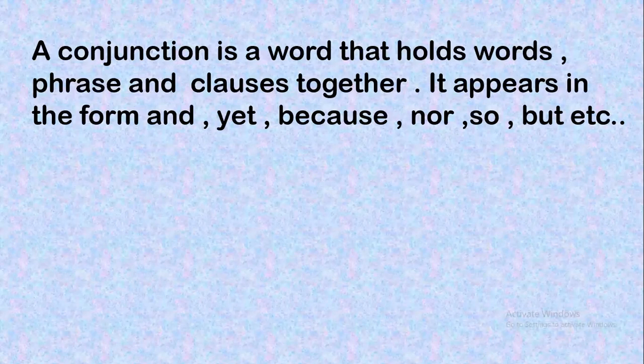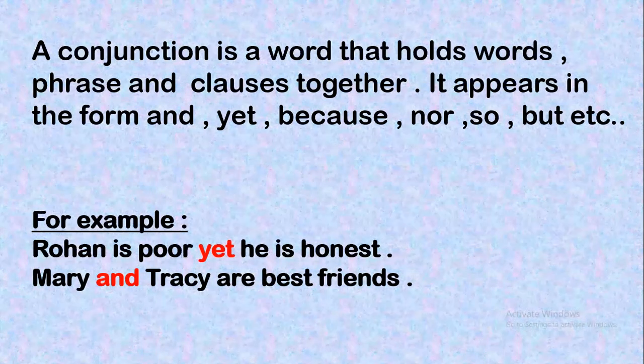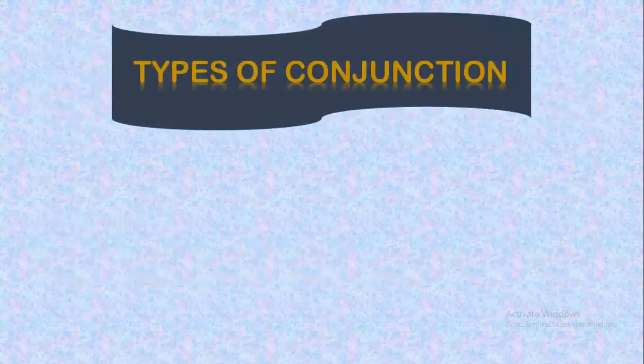Let's see with the help of examples. Throne is poor, yet he is honest. Mary and Tracy are best friends. Here you can see the words 'yet' and 'and' are the conjunctions which are used in the sentences. Now let us see the types of conjunction.